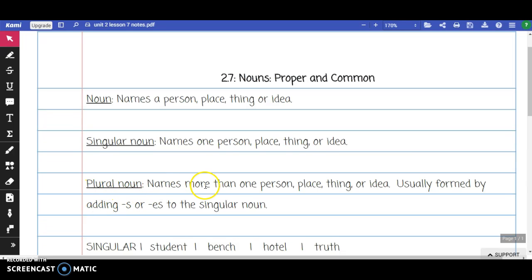A plural noun names more than one person, place, thing, or idea. Plural nouns are usually formed by adding an S or ES to the singular form of the noun.